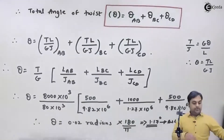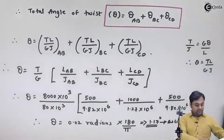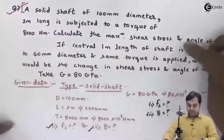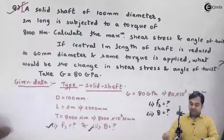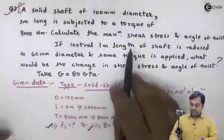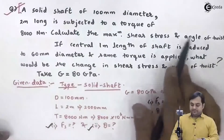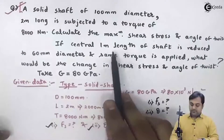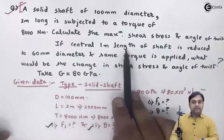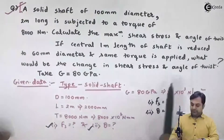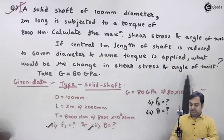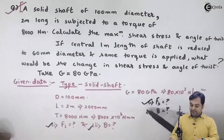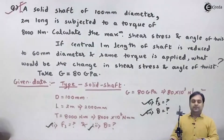In this question, divided into two parts: first we calculated shear stress and angle of twist for the original uniform shaft; in the second part, with the central 1 meter length diameter reduced, we calculated the new shear stress and angle of twist. With this we complete the problem.